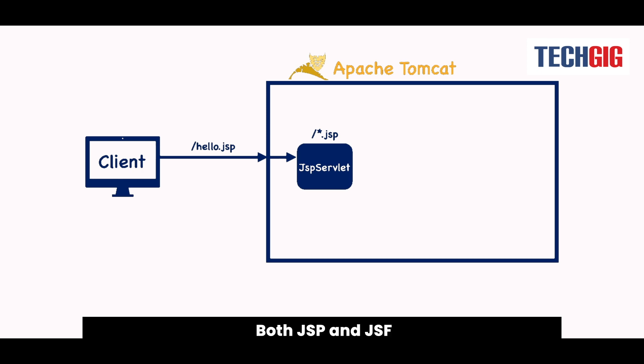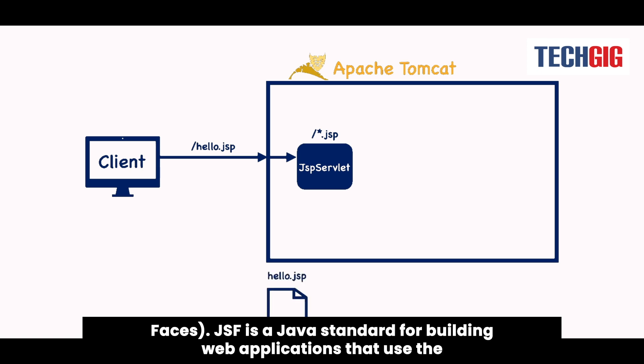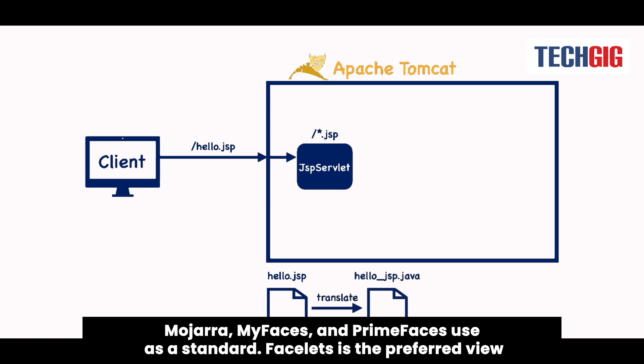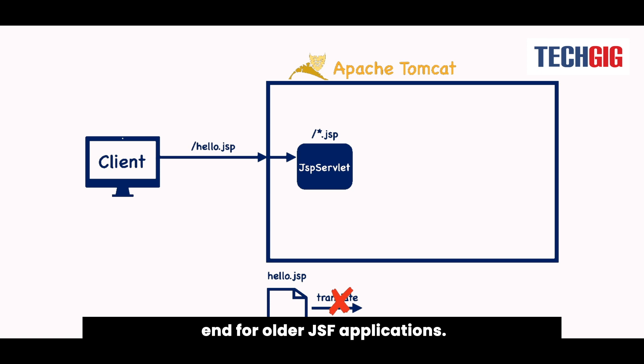JSP is very similar to JSF, which stands for Jakarta Server Faces, formerly Java Server Faces. JSF is a Java standard for building web applications that use the Model-View-Controller (MVC) pattern. It is what Java web frameworks like Eclipse Mojarra, MyFaces, and PrimeFaces use as a standard. Facelets is the preferred view technology for modern JSF implementations. JSP is sometimes used as the front-end for older JSF applications.